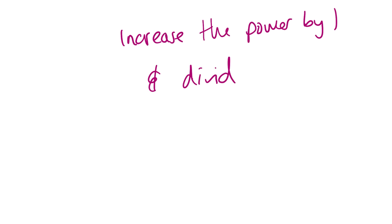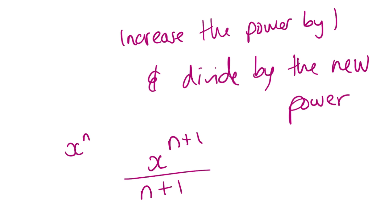Last chapter is integration. Increase the power by 1 and divide by the new power. So, if you have x to the power of n, you're going to do x to the power of n plus 1 over the new power n plus 1. So the integral of this equals this and what should we always remember? Plus c, our constant of integration. It will then say find the constant of integration. Find the equation. If you need to find the equation, they'll give you a point which you can substitute in and find c.